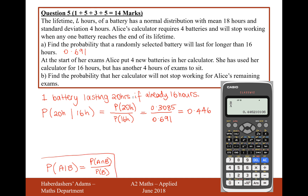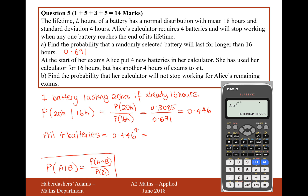That's the probability of one battery lasting 20 hours if it's already lasted 16 hours. But Alice needs this to happen for all four batteries. So for all four batteries, she needs to do 0.446 × 0.446 × 0.446 × 0.446. Think of it like a tree diagram — battery one yes, battery two yes, battery three yes, battery four yes — multiply along the branches. Using the calculator answer button to the power of 4, we get a very low probability of 0.0396 to three significant figures.